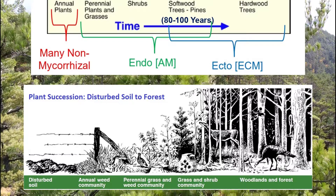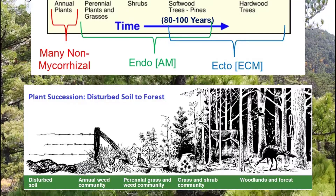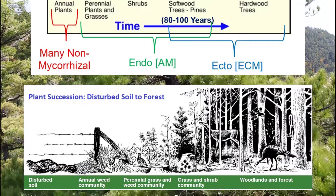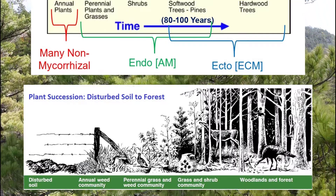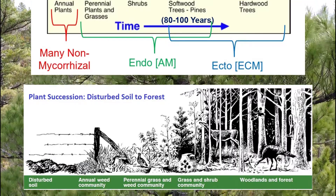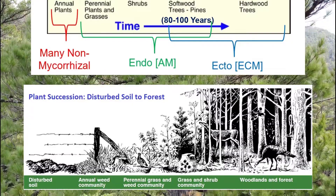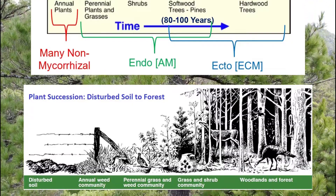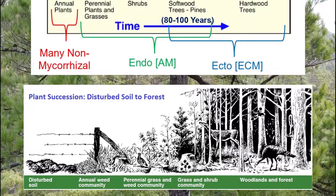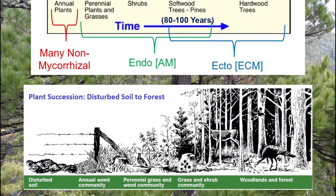But as the perennial plants and shrubs return, the oldest type of mycorrhizal comes with them — the endo or AM mycorrhizal. These are the long-standing symbiotic partners of all mid-successional plants.